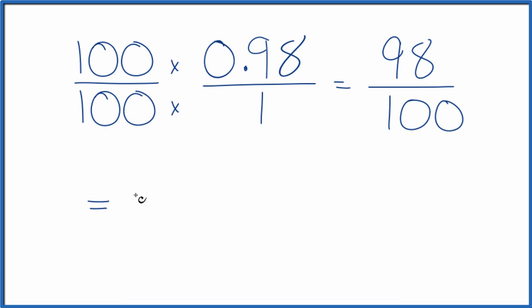So 98 divided by 2, that's 49. And then 100 divided by 2, that's 50. So we can simplify 98 hundredths down to 49 fiftieths. And we can't simplify this any further.